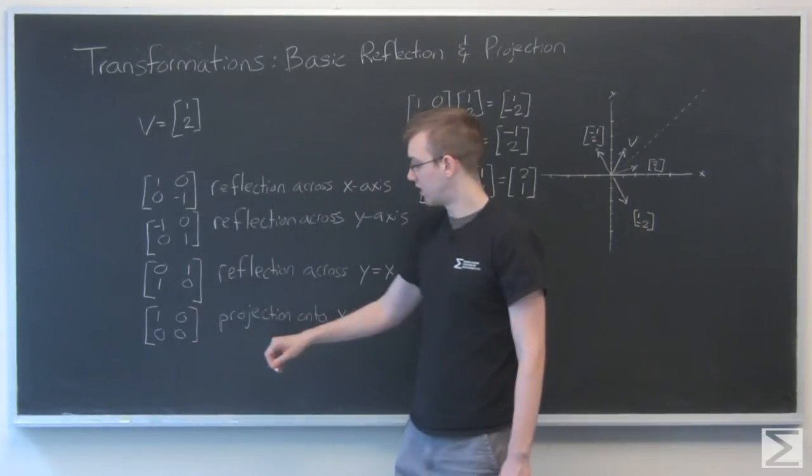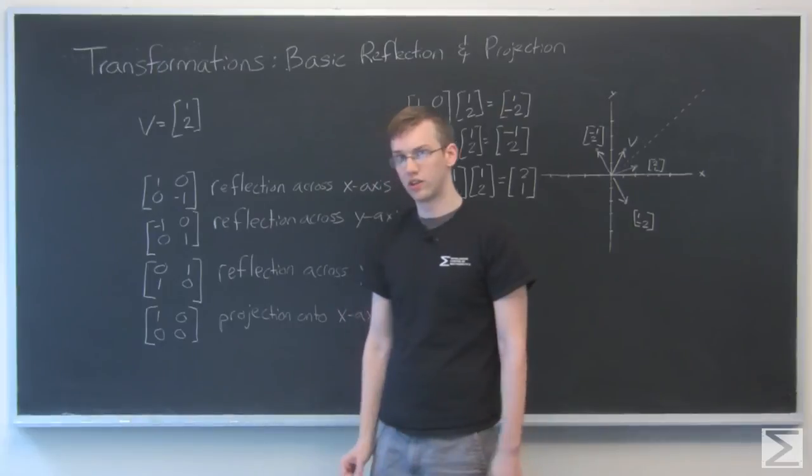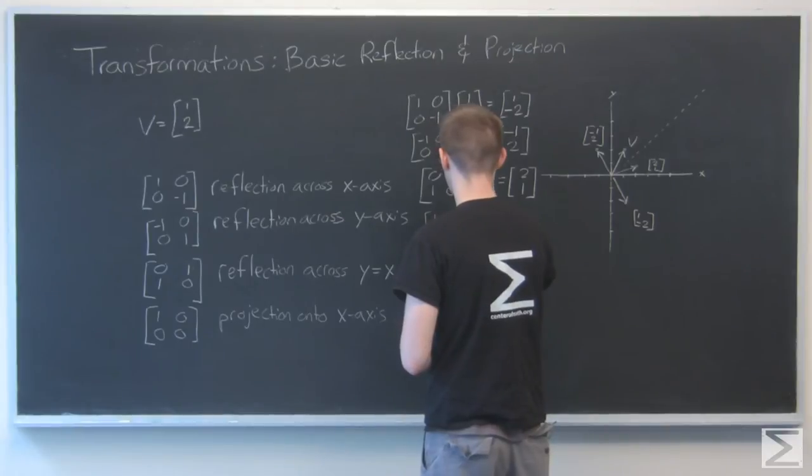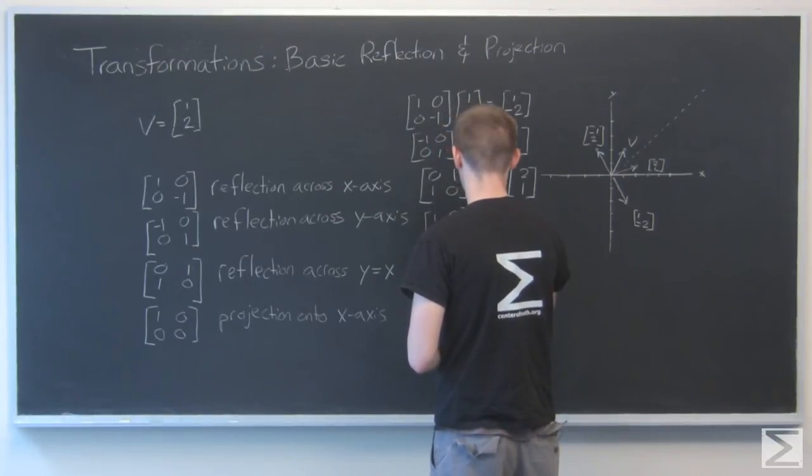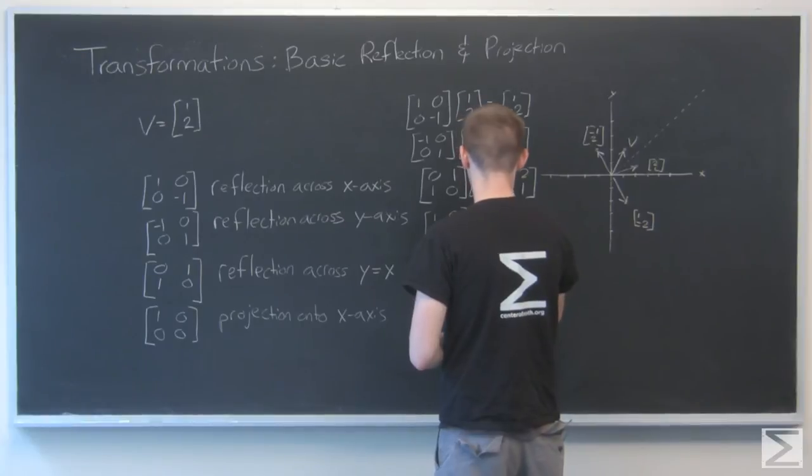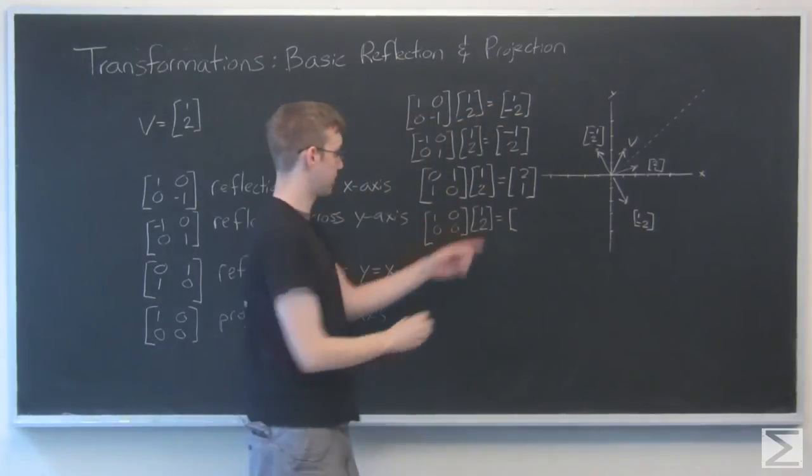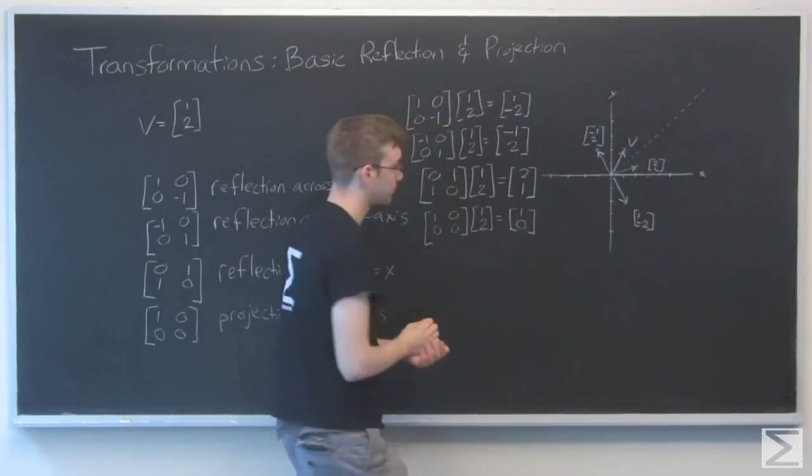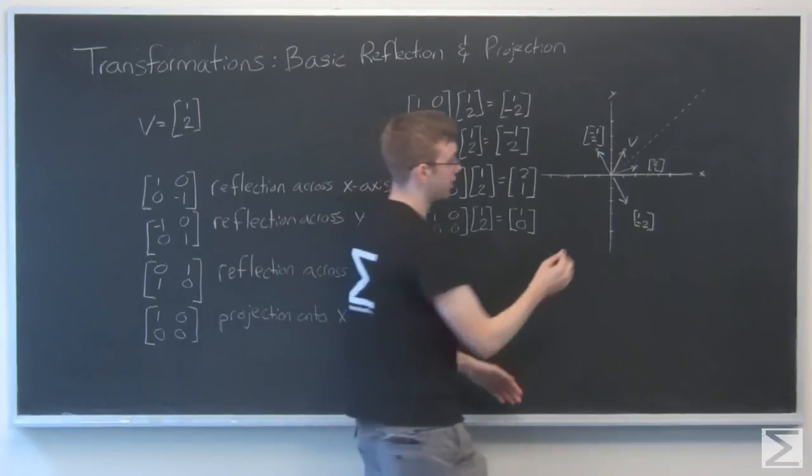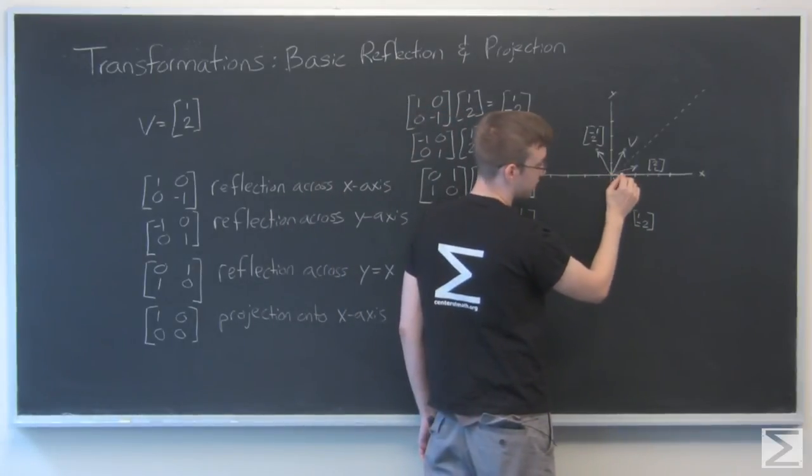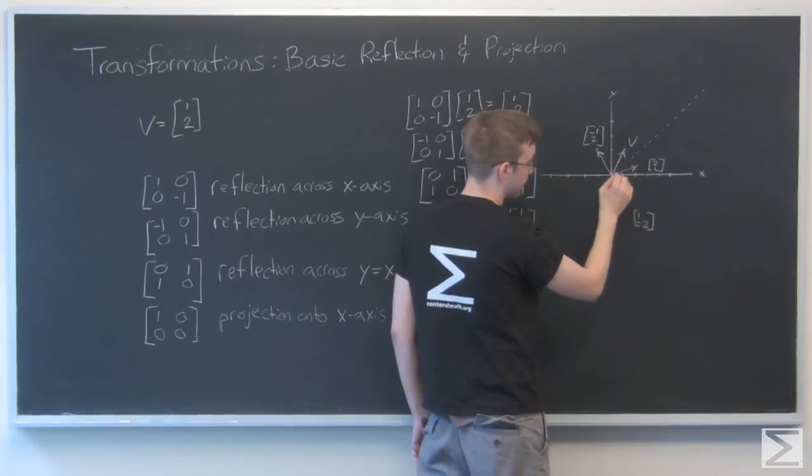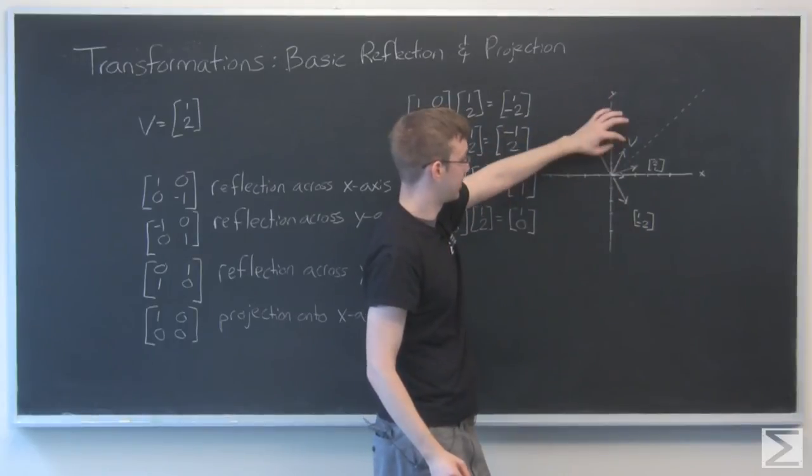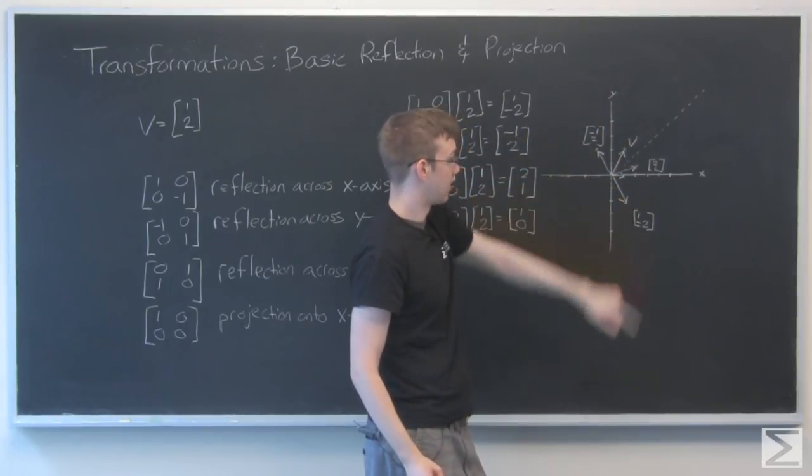So to start projection onto the x-axis. It looks like this. Just a 1 in the upper left-hand corner and then the rest is all 0s. And the effect of that, it keeps the 1 the way it is and it gets rid of the second number, this 2. So if I chart that, that's just this little part right here.